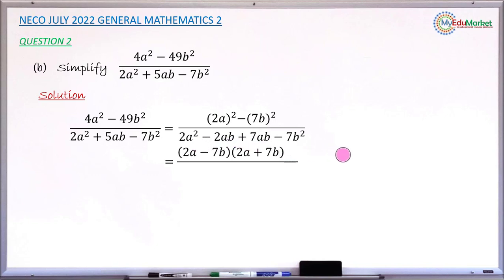Then factorization of the denominator. Looking at the four terms, taking the first two, 2a² and -2ab, what is common here is 2a. 2a can divide these two terms. If I look at the third and fourth term, 7ab and -7b², I can divide each of these two terms by 7b.